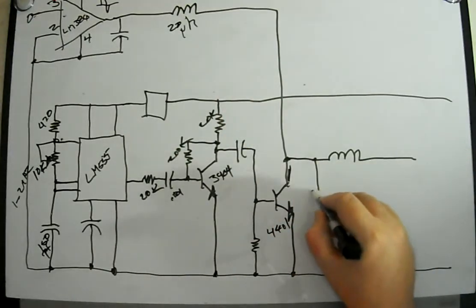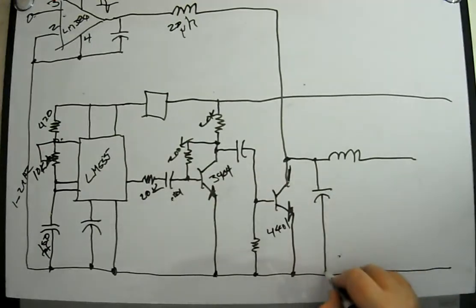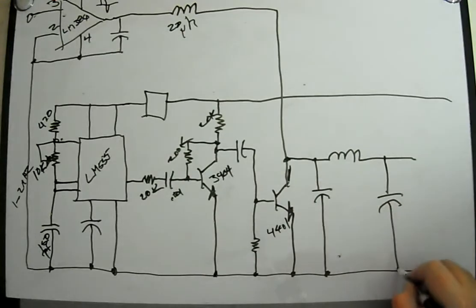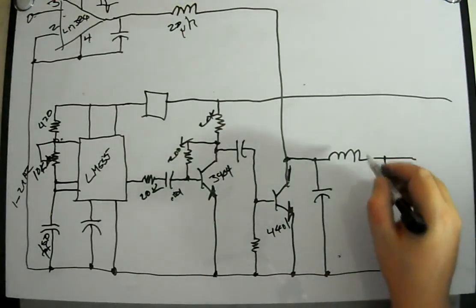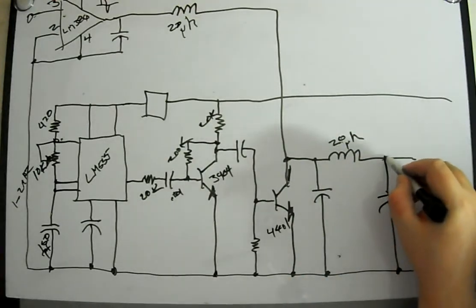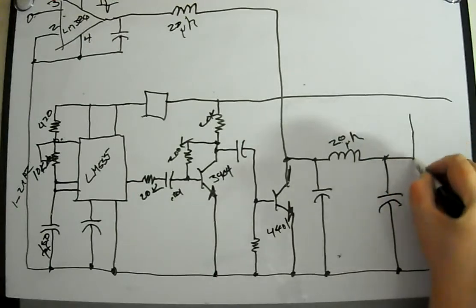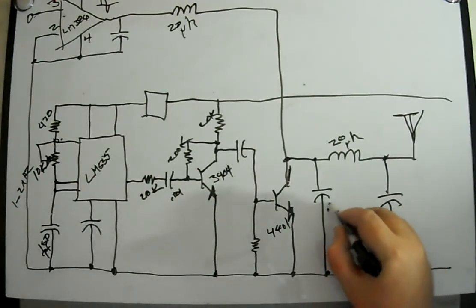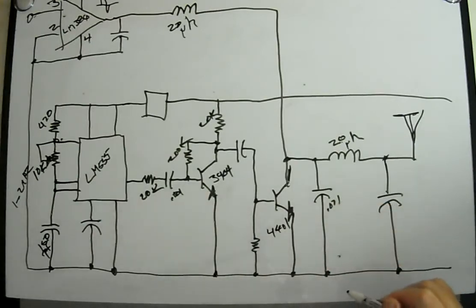This output stage we just couple through another inductor, it can be just like that one, and we put a capacitor here and we put a capacitor here. These two capacitors and this inductor form what's called a pi filter, and the pi filter helps shape the output of our amplifier, of our transmitter circuit.